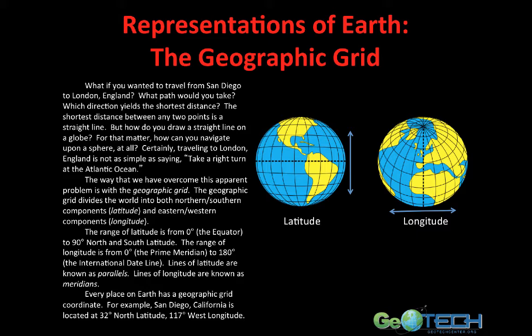Certainly traveling to London, England is not as simple as saying go straight, make a right, hit the ocean and take another right. The way that we have overcome this challenging problem is with something called the geographic grid. The geographic grid divides the world into the northern hemisphere and the southern hemisphere, which gives us a north-south component providing latitude, and an eastern and western hemisphere, which provides a longitudinal component.